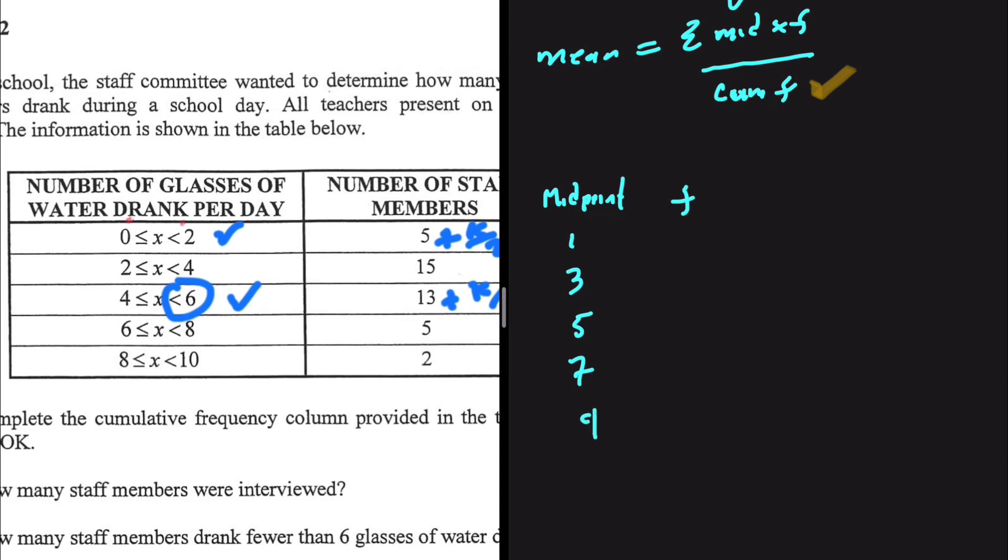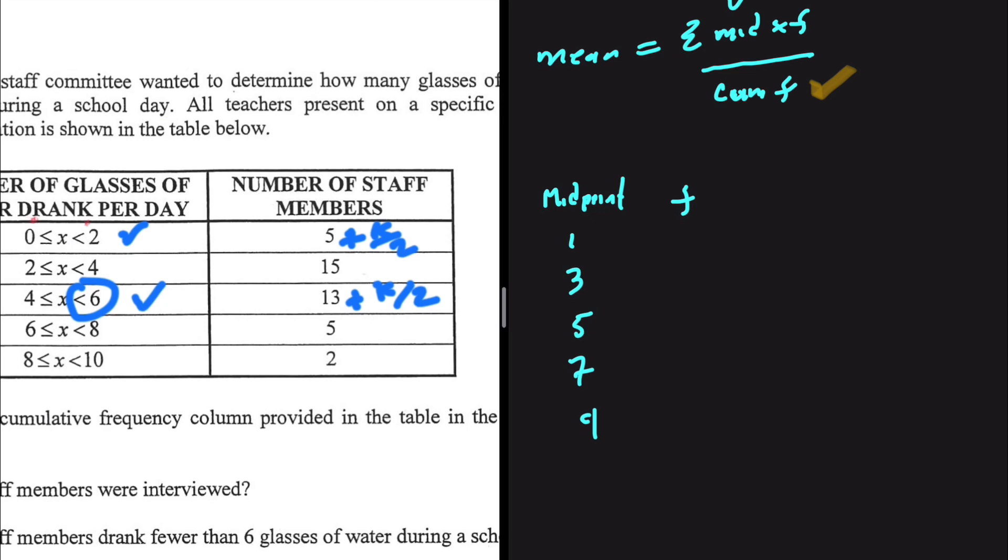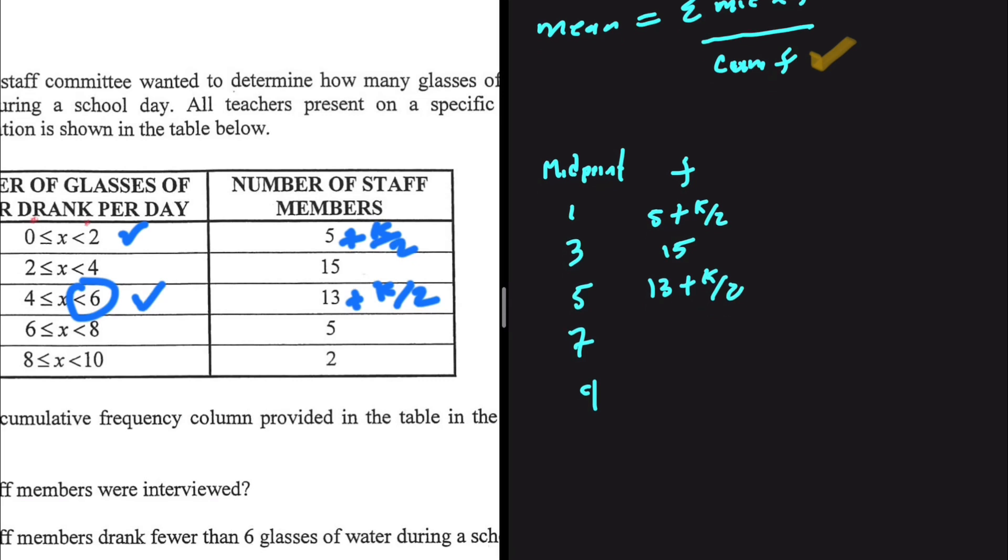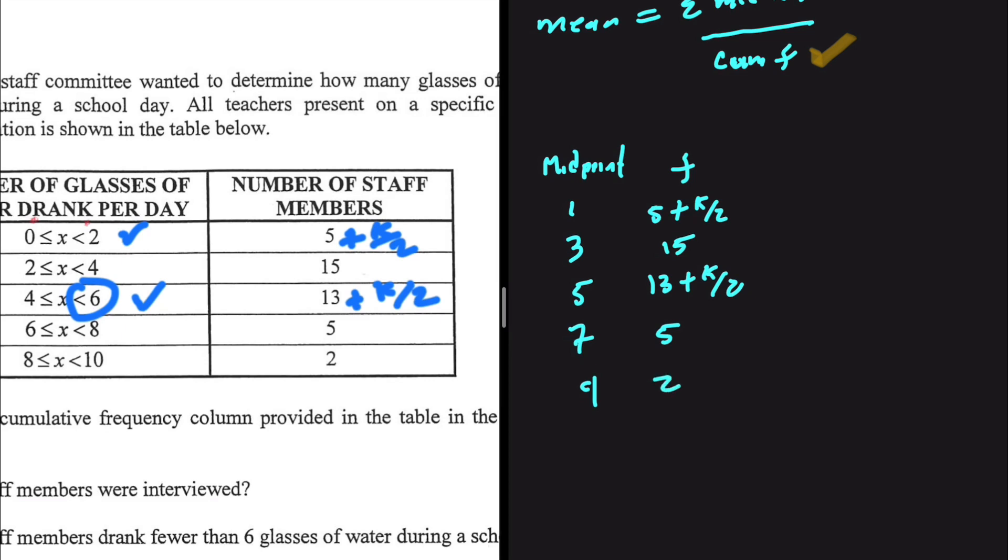And then we have the frequency. So the frequency for 0 to 2, we know that it is 5 plus k divided by 2, followed by 15, and then 13 plus k divided by 2. For 7 the frequency is 5, for a midpoint of 9 glasses the frequency is 2.